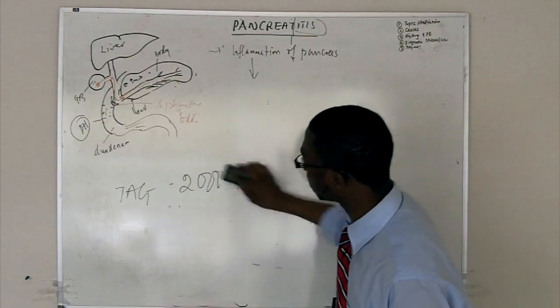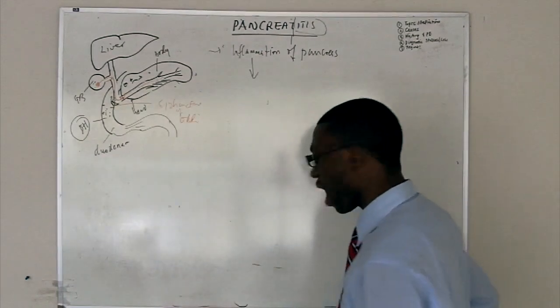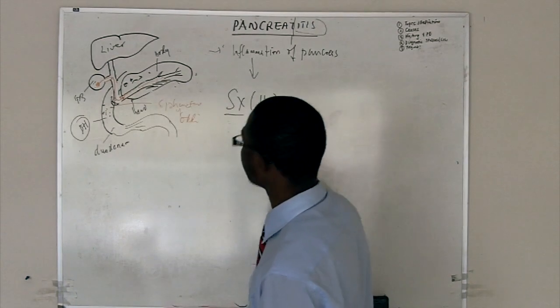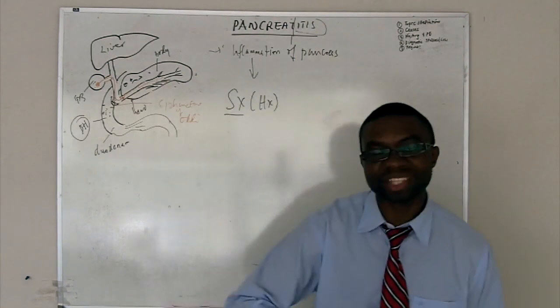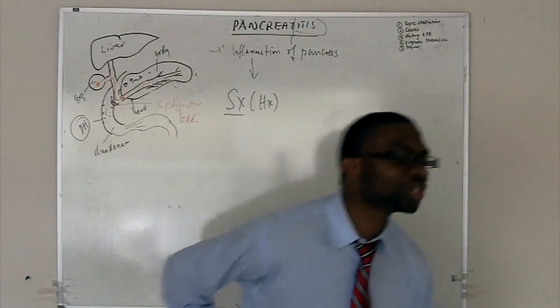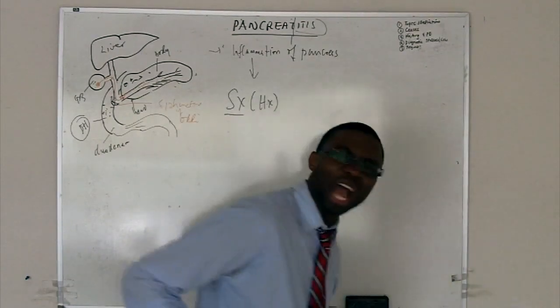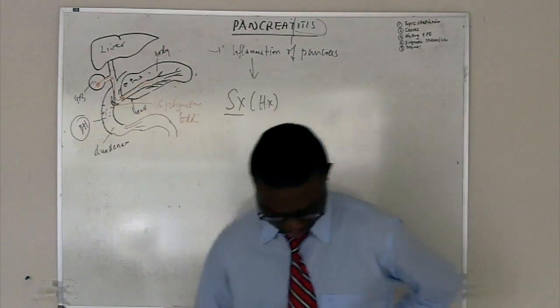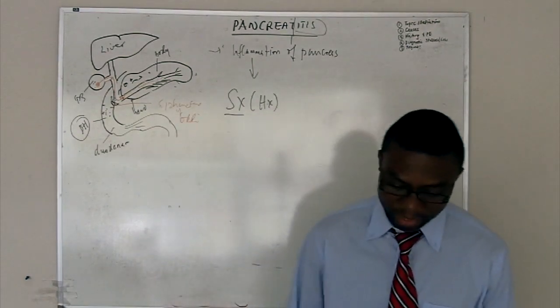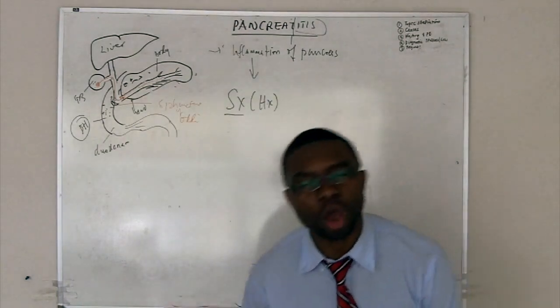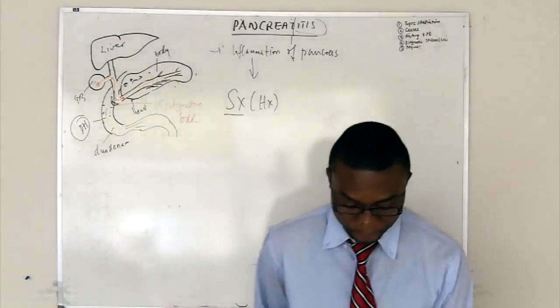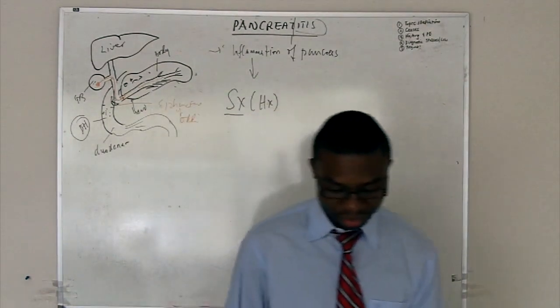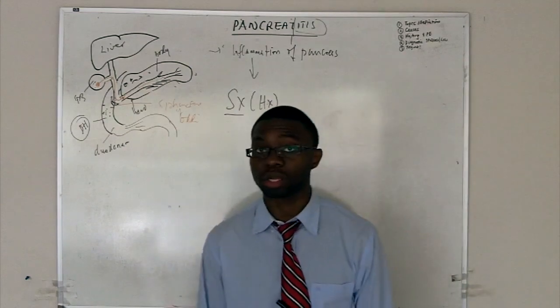Now that we talked about the causes, how are these patients going to present? History. It's going to be epigastric pain, mid-epigastric pain radiating to the back. They're going to be like, Doc, I'm in pain. It's going to my back. It's crazy. Severe, radiating to the back. They're going to have nausea, vomiting, weakness.